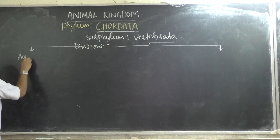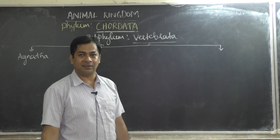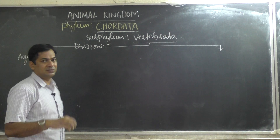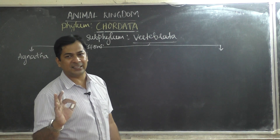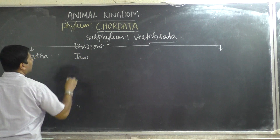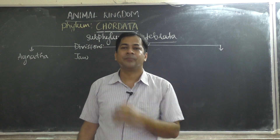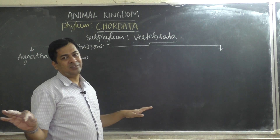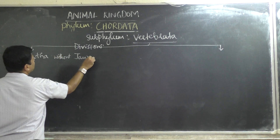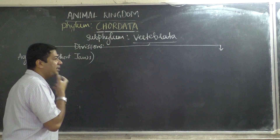Division one is Agnatha. 'Gnathos' is a Greek or Latin word meaning jaw, and 'a' means without. So Agnatha means animals without jaws — they do not have a jaw. Division two is Gnathostomata. 'Stoma' means mouth, so Gnathostomata means animals whose mouth is supported by a jaw — animals with jaws.